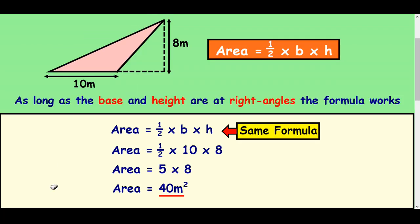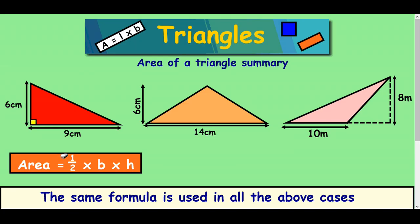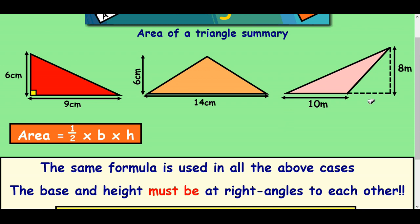So this formula works for these three types of triangles: a right angle triangle, an isosceles type of triangle, and this type of triangle here. Now you'll notice that the base and the height are always at right angles, they must be for it to work.